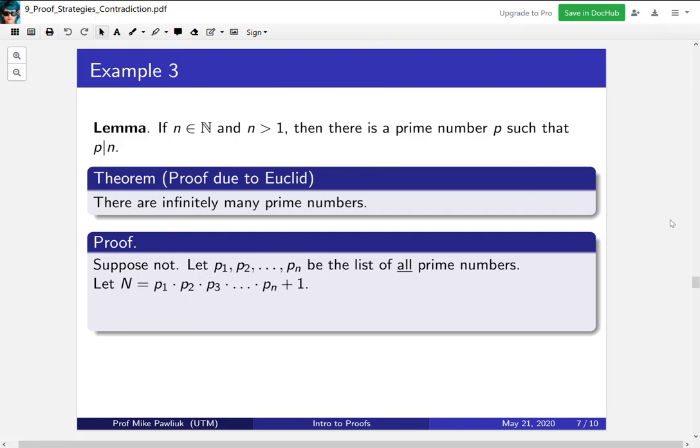Now we have this extremely clever step. Make this new number, which is the product of all of those primes on that list and add one. This number is going to have very strange properties.